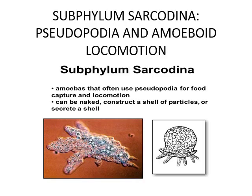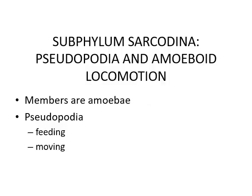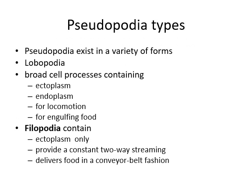Subphylum Sarcodina is characterized by pseudopodia and amoeboid locomotion. Amoeba in this subphylum use pseudopodia for food capture and locomotion, and can be naked, construct a shell from secreted particles, or secrete a separate shell. Members of this subphylum are amoeba whose pseudopodia are involved in both feeding and movement.